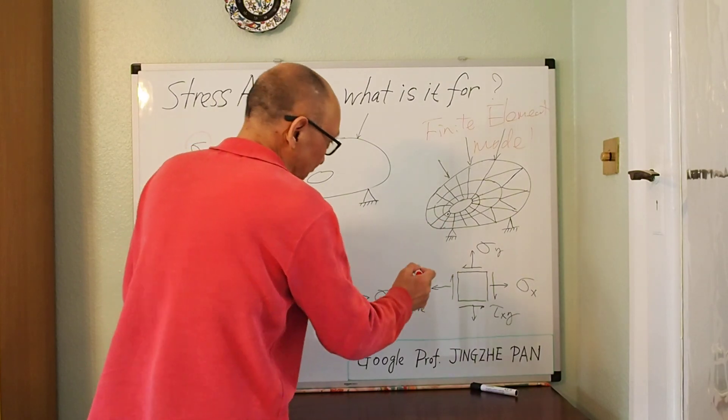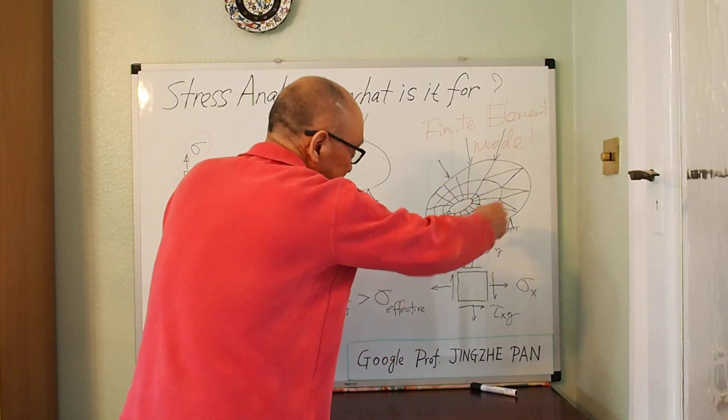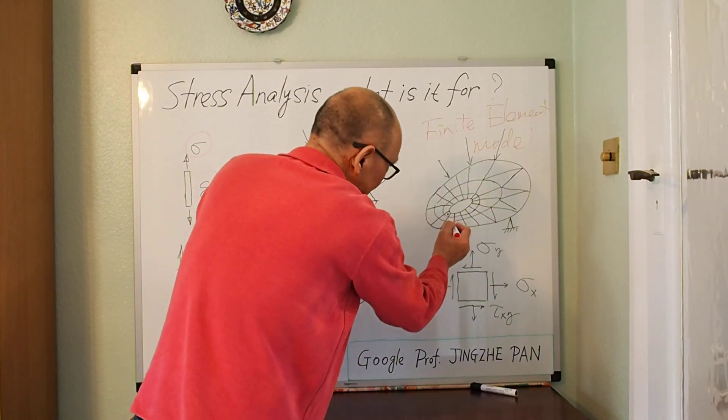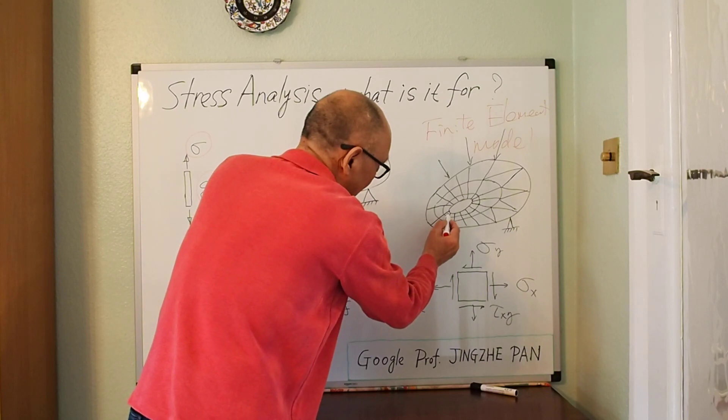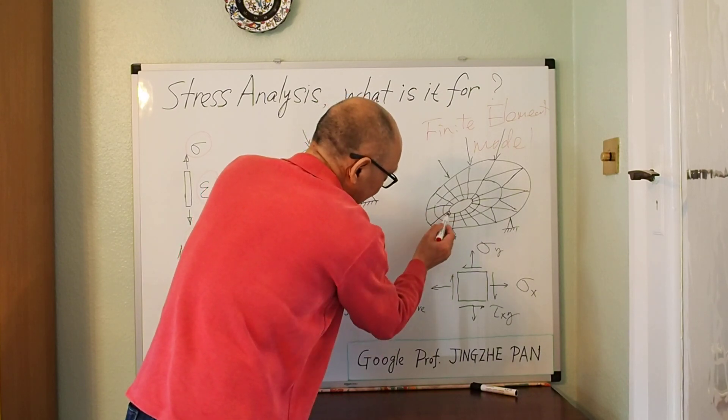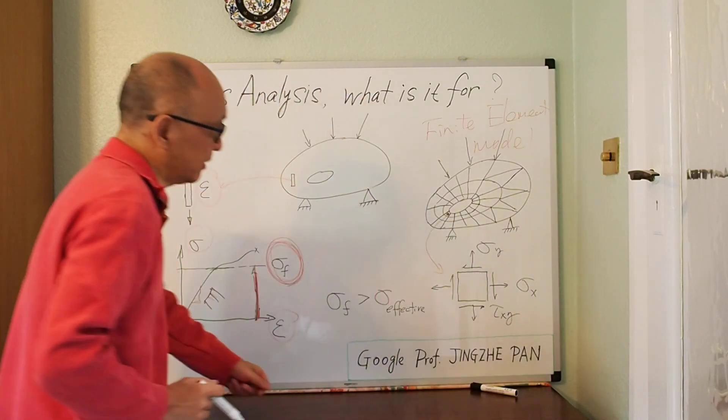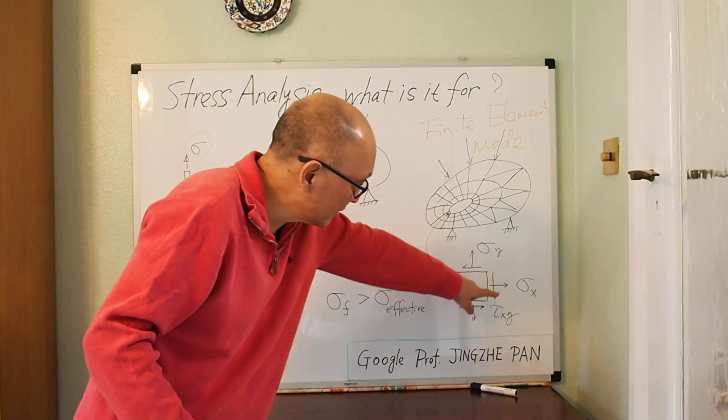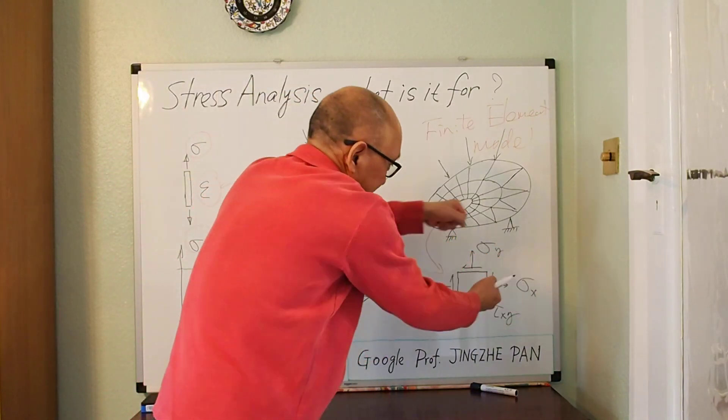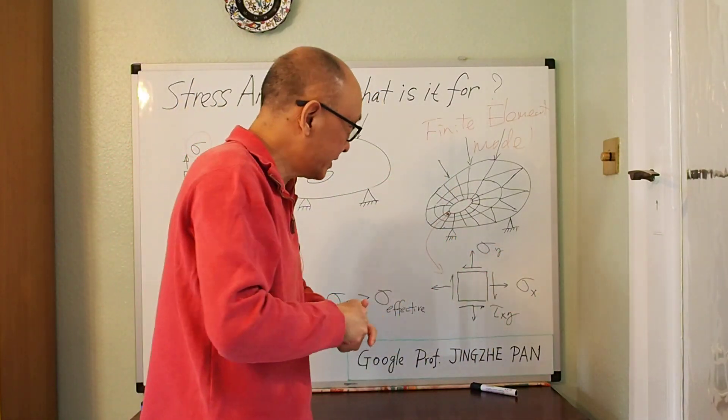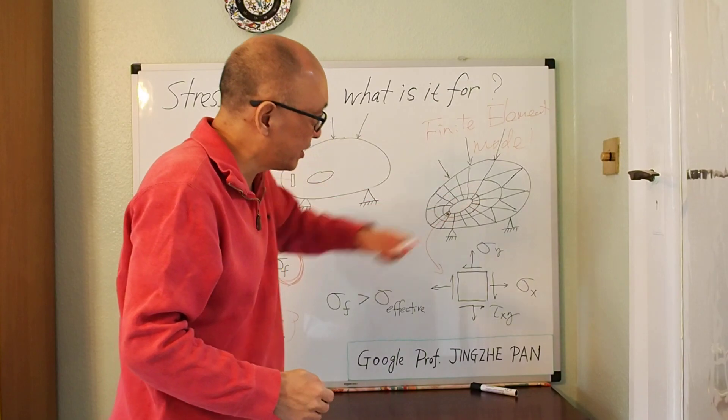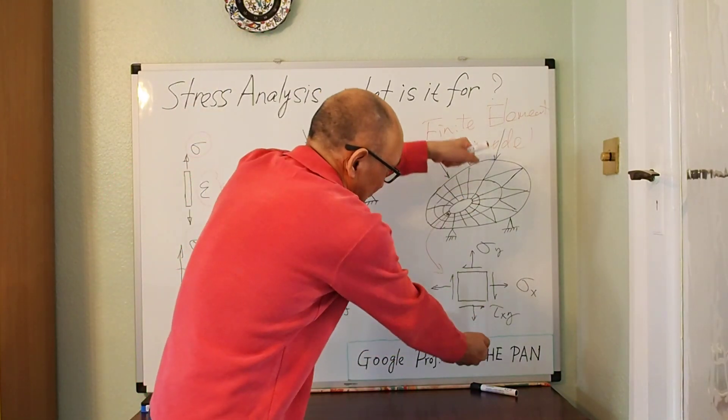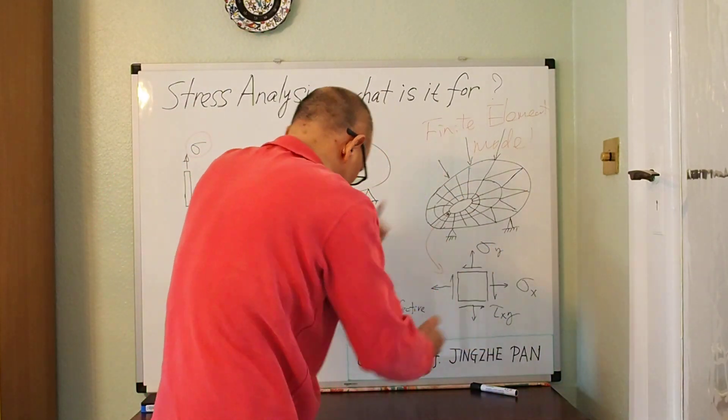And then what you have is any point of this structure now, you get a set of stress. So let's just say if you focus in on one point, any particular point, one point. And I take that point in. Take that point out. And I enlarge that small element, and I got stresses. I got stresses in all directions. You can understand, in this real engineering situation, you don't have stress just in one direction. You might have stress in all other directions.